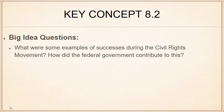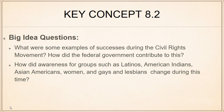Our big idea questions — I always like to start with something to focus our energies as we go through these notes. One of the big ideas we're focusing on with the African American Civil Rights Movement is successes and failures: what did the movement achieve, especially during the 1950s and 60s, how did the federal government contribute to this, what did the movement fail to achieve, and how is the movement still ongoing today?